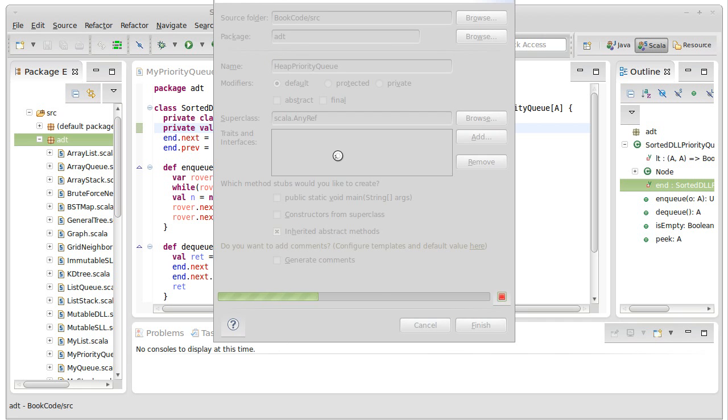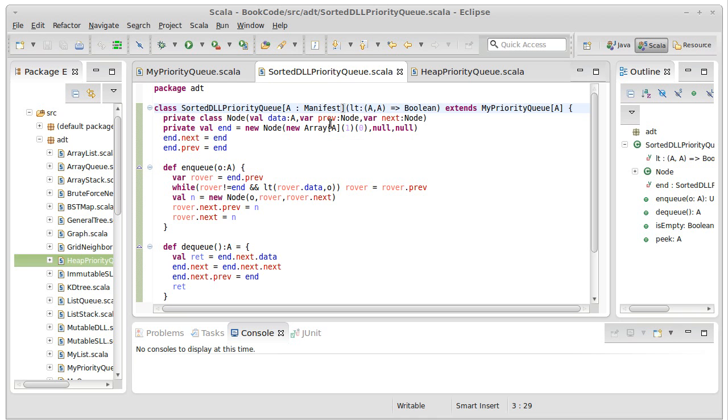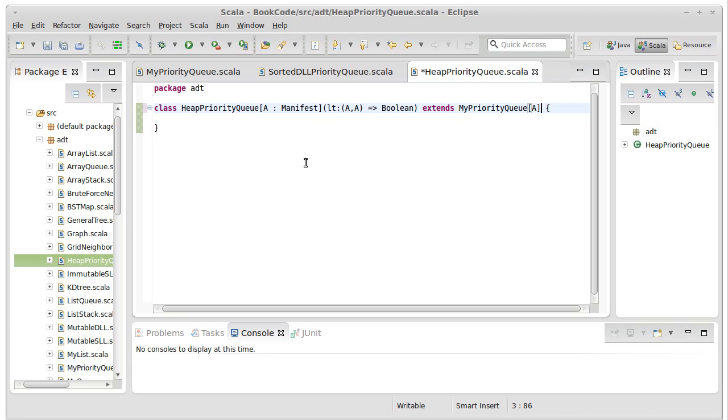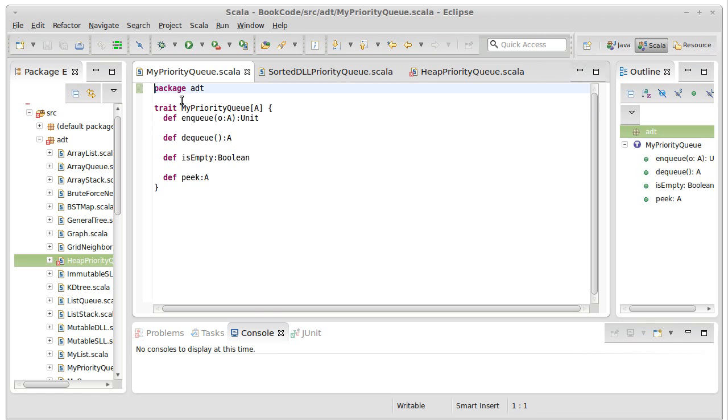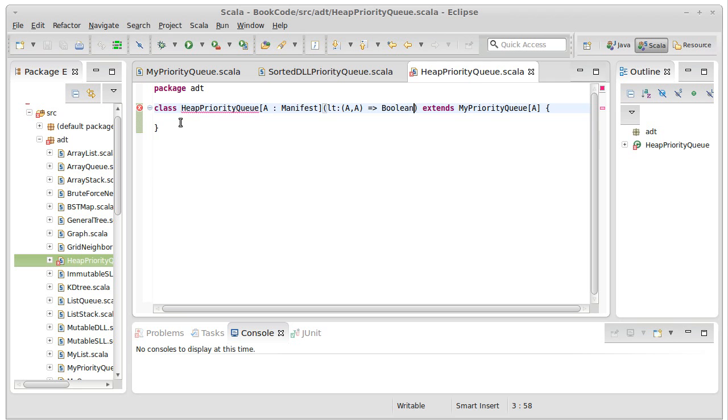we'll call it the heap priority queue. I'm going to leave out the detail that it's technically a binary heap and there really is a difference between different types of heaps. For now, the only one that we're considering is that. And just like with my sorted linked list, here I definitely need to have an array. So I'm going to need to have a manifest. I need to pass in a function that is going to compare values and I'm going to extend my priority queue.